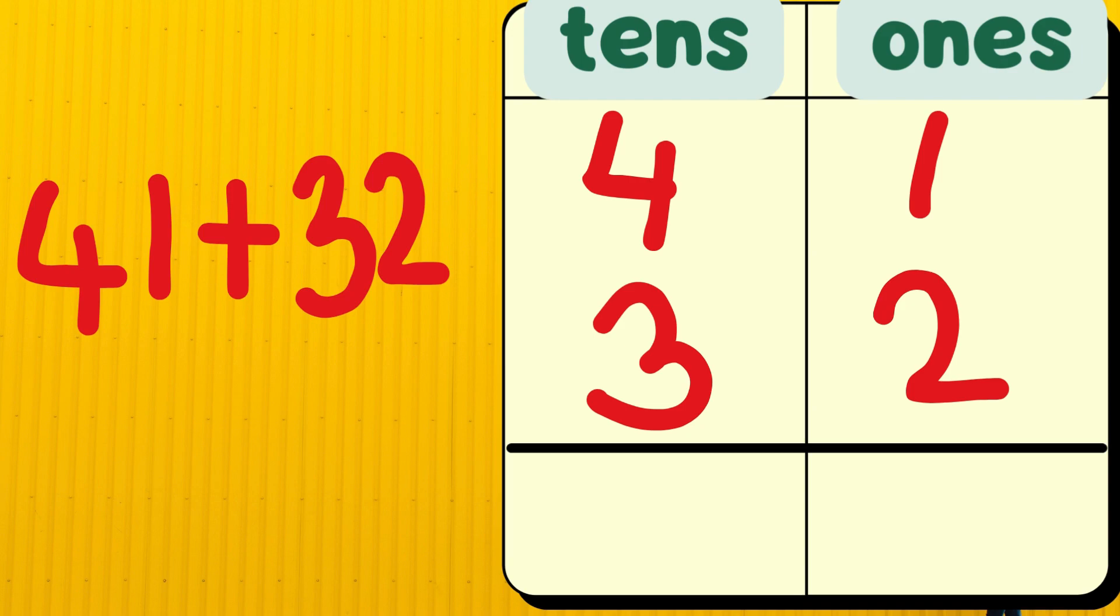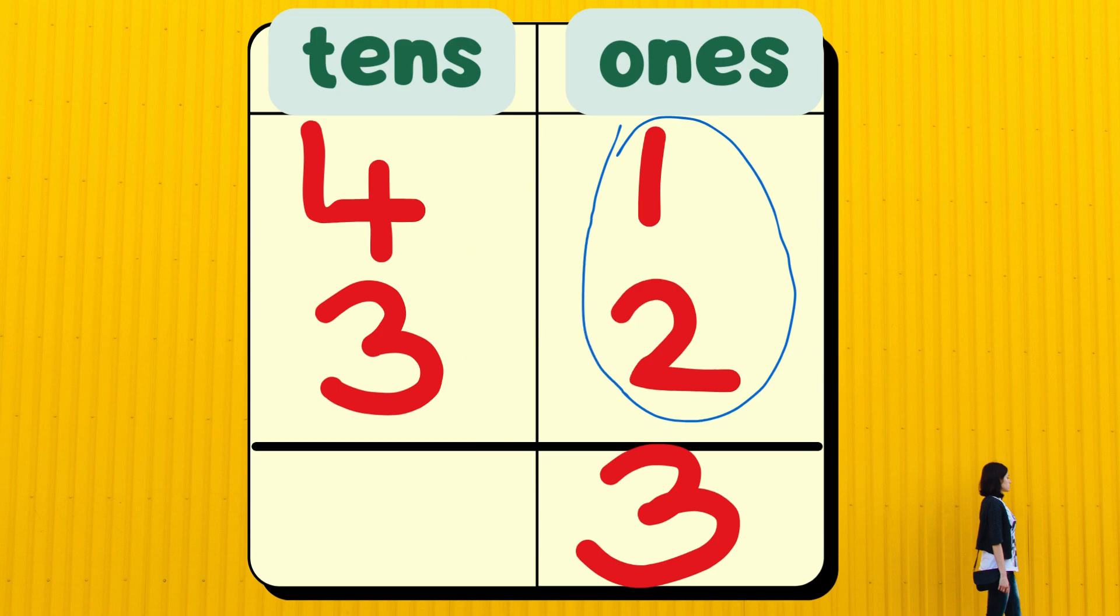To add 41 and 32, let's write them in the base 10 chart first. Now, I have to add the 1s. When I add 1 and 2, I get 3. Let's write 3.